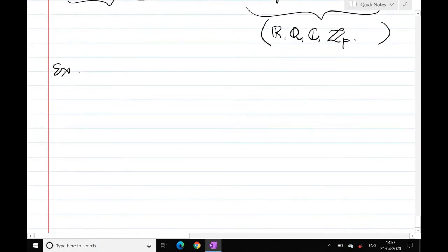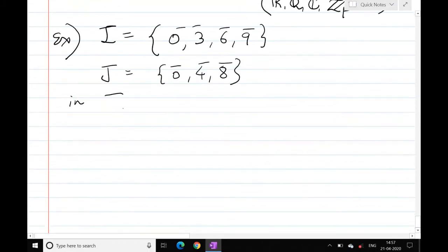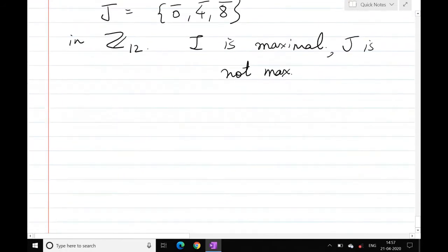So what is an example? I take I equal to {0, 3, 6, 9} and J equal to {0, 4, 8}, and these are in Z12. What I want to show is that I is maximal, and I will show you that J is not maximal. And why is that so?